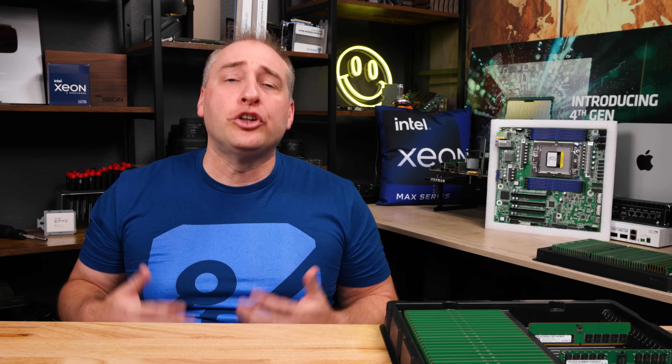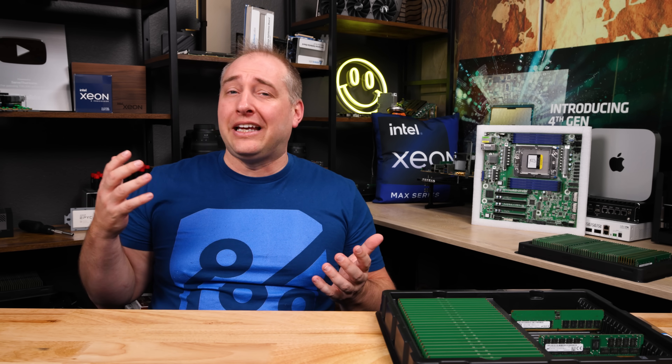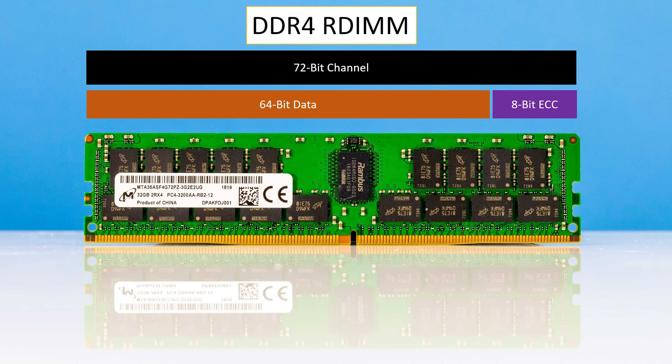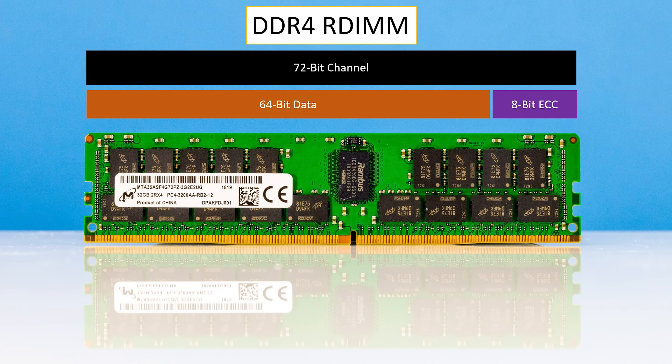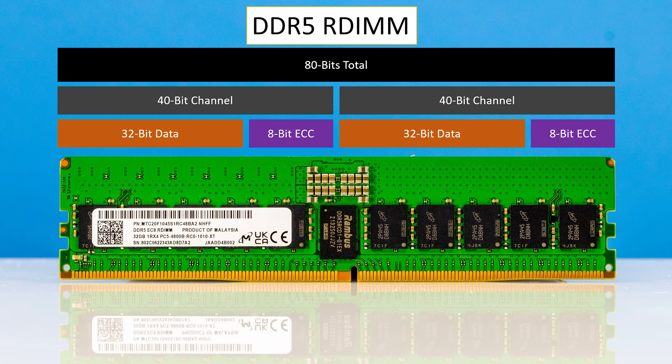The next thing to talk about on DDR5 is the channel situation. With DDR4 servers, AMD EPYC Milan had eight memory channels but you could do two DIMMs per channel — 16 DIMMs per socket total. DDR5 servers are a little different. DDR4 DIMMs were 72-bit DIMMs — 64 data bits plus 8 ECC bits. DDR5 DIMMs are effectively 80-bit DIMMs, but instead of a single 64-bit data path, we actually have two 32-bit sub-channels. They're actually 40-bit channels: 32 data bits plus 8 ECC bits each. So a DDR4 DIMM is one channel, and a DDR5 DIMM is two channels.